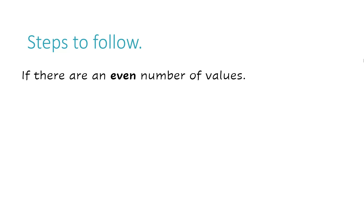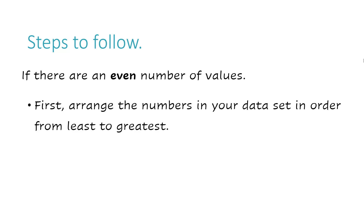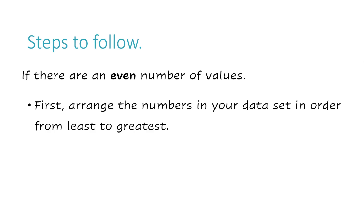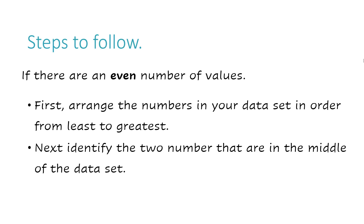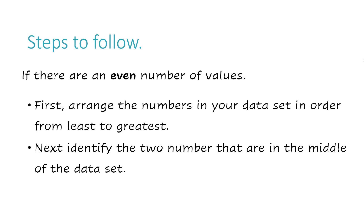The steps you're going to follow if you have an even number of values in your data set. First, you're going to arrange the numbers in your data set in order from least to greatest. Next, you're going to identify the two numbers that are in the middle of the data set. The median is the mean of the two middle numbers.